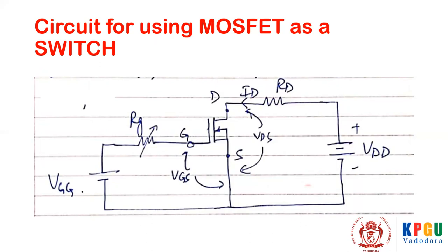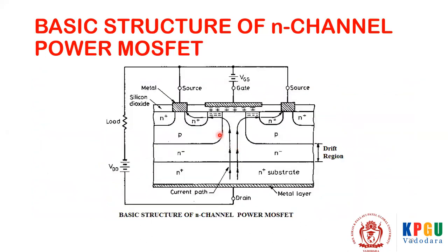This is the circuit where you would use MOSFET as a switch. The drain is given positive with respect to source, and the gate is also given positive with respect to source for an n-channel MOSFET. When gate supply is applied, it induces charge through the SiO2 insulator between the gate metallic terminal and the channel. When positive voltage is applied, negative charges are induced in the brief p-channel, which bridges the gap between source and drain.